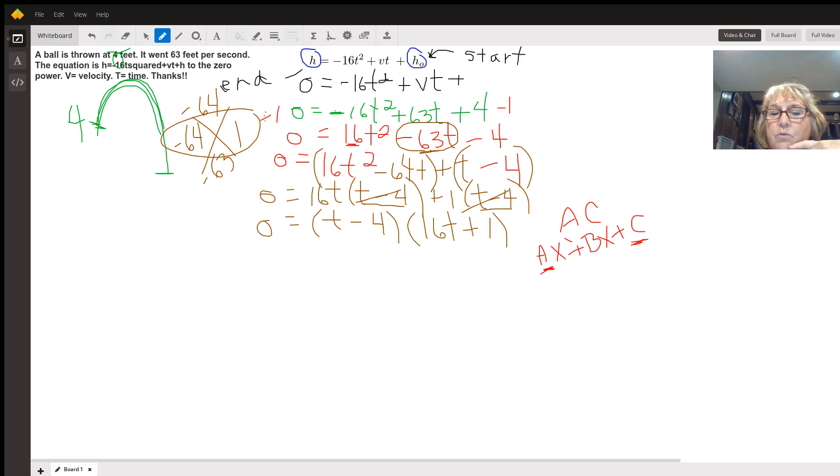Now I have two factors that equal zero. So one of those has to be a zero. There's no other way to get a product of zero unless one of those factors is a zero. So I'm going to go over and I'm going to set each of those equal to zero. Let's go over here and say T minus four equals zero. That's one possibility. In that case, T would be four.